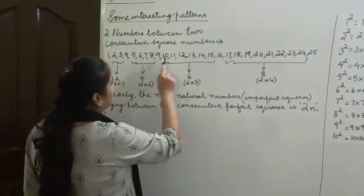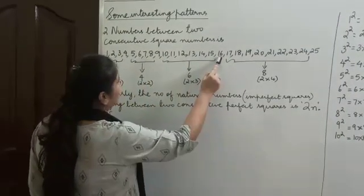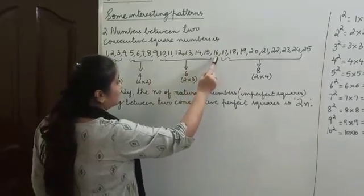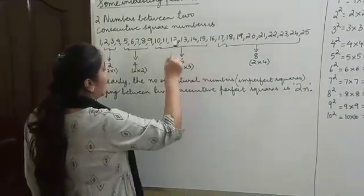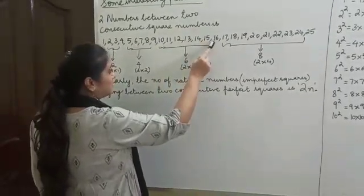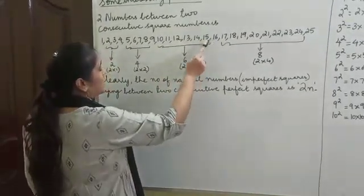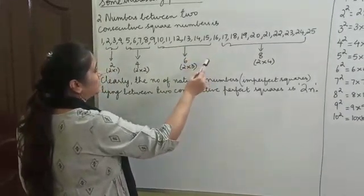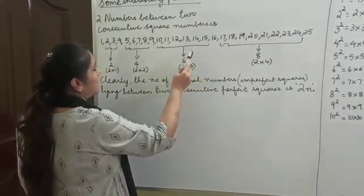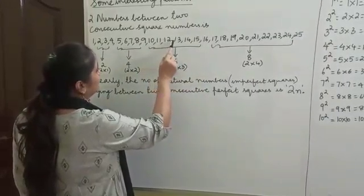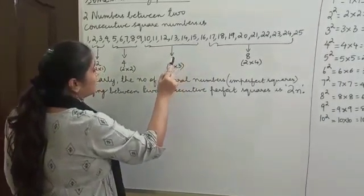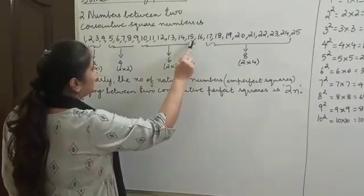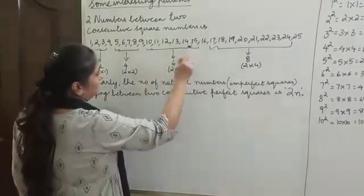Again, between 9 and 16: 9 is a perfect square and 16 is a perfect square. After 9, 16 is the next perfect square, so 9 and 16 are two consecutive perfect square numbers. Between them, we have 6 imperfect squares — that is, 10, 11, 12, 13, 14, and 15. We have 6 imperfect squares lying between 9 and 16.